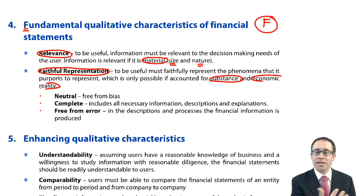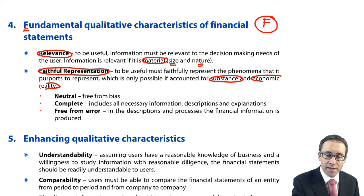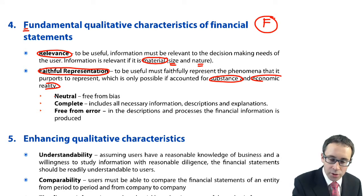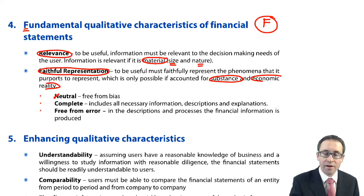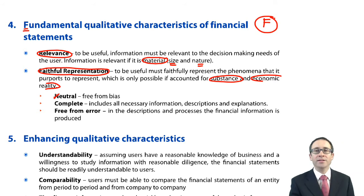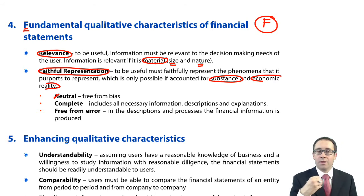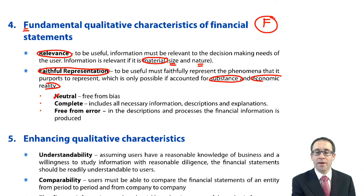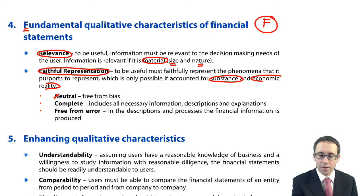As well as thinking about substance and economic reality, things need to be neutral — that is, free from bias. So when you're making decisions about material balances, make sure that you are not unduly biased in your reporting of that information.